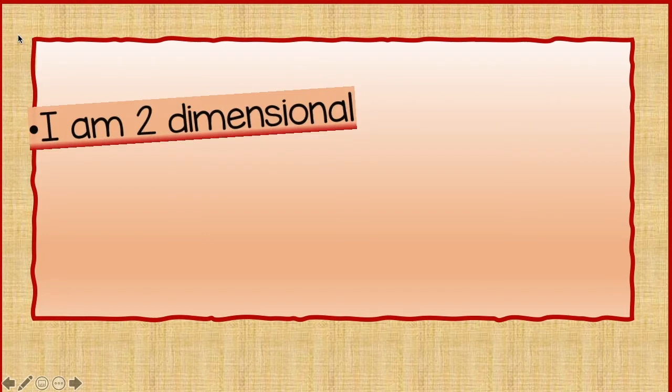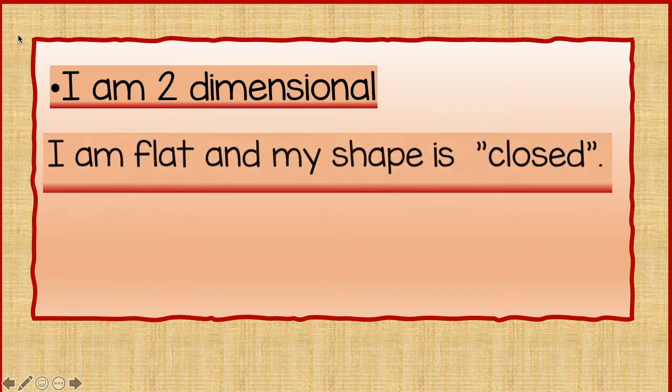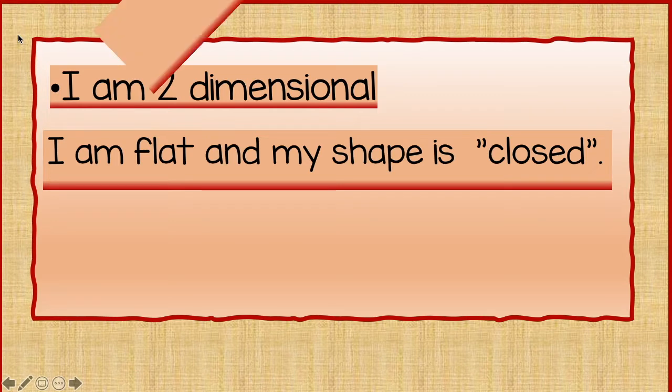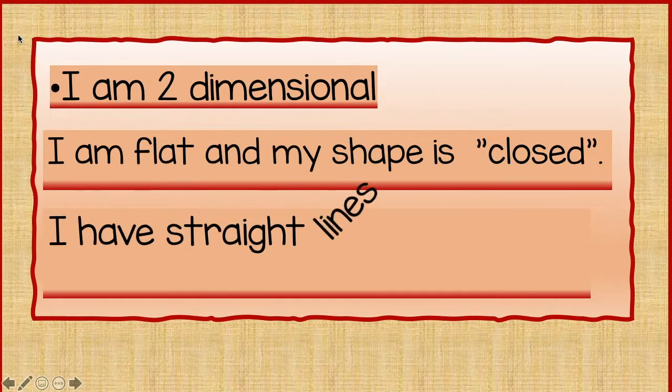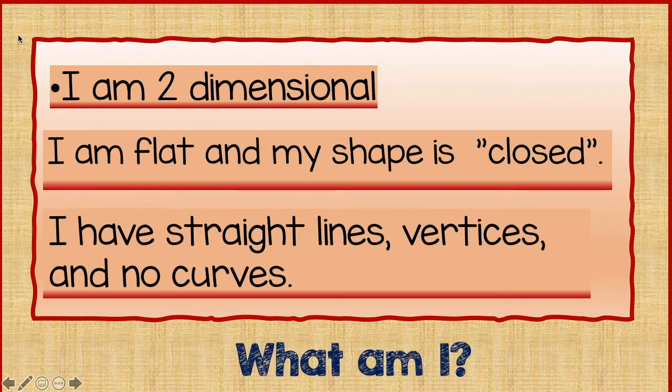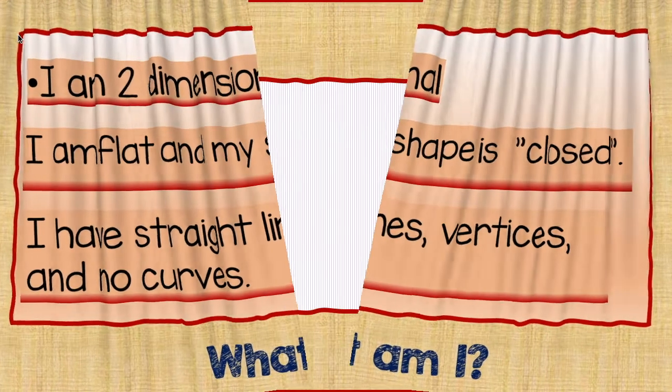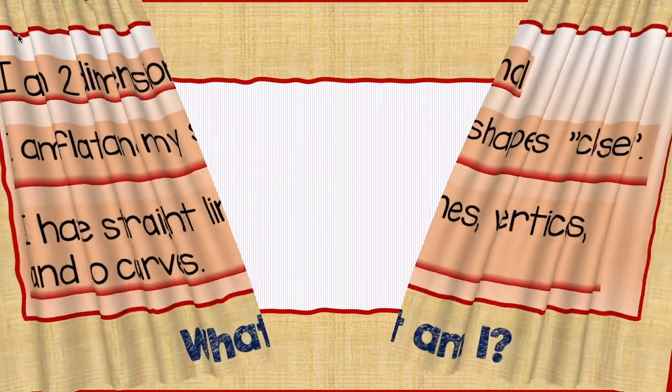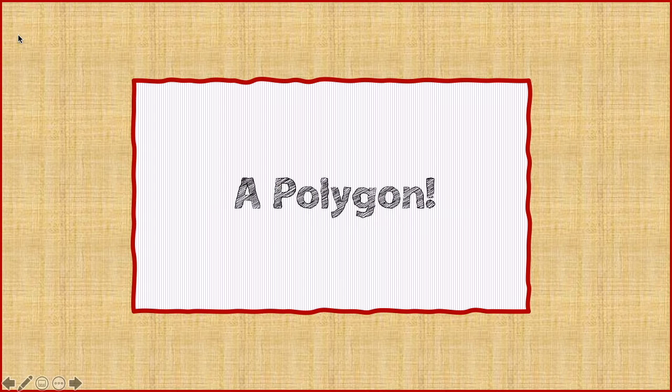Riddle number one. I am two-dimensional. I am flat and my shape is closed. I have straight lines, vertices, and no curves. What am I? Can you guess it? Pause the video and take a guess. Did you guess it? A polygon. Good job.